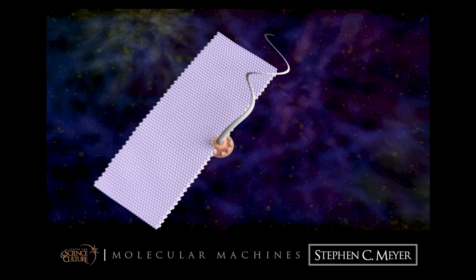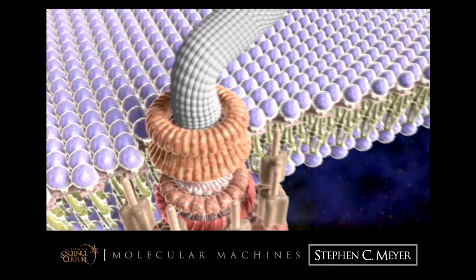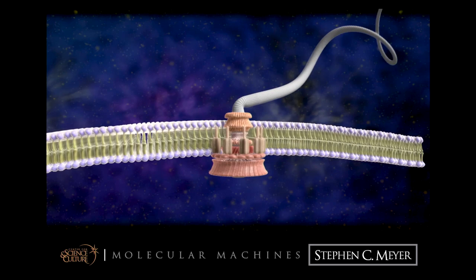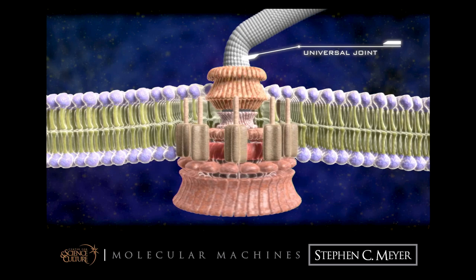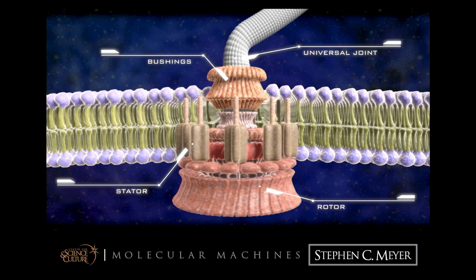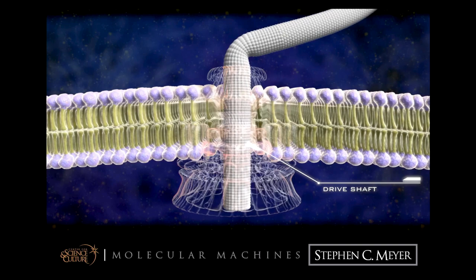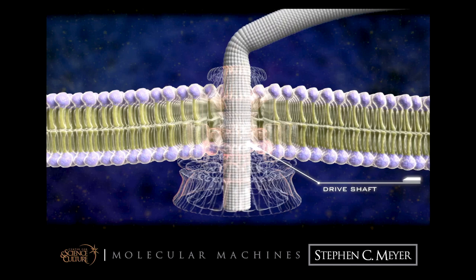Another example is the bacterial flagellar motor — also a rotary engine, made famous by Michael Behe at the Discovery Institute. It has a rotor, a drive shaft, a U-joint, and bushings that sit in the cell wall of a bacterium. It's high tech in low life. All its parts are made of proteins that fit together in a beautifully integrated way, allowing the bacterium to move through liquid. It's hardwired into a signal transduction system that lets the bacterium sense changes in sugar gradients and chase down its food supply. In some species, this rotary engine can rotate 100,000 RPM and change directions on a quarter of a turn.